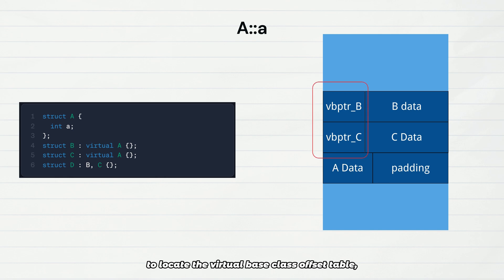Accessing A::a requires two levels of indirect addressing: use the virtual base class pointer to locate the virtual base class offset table, calculate the actual address of the A sub-object using the offset table, and only then can the value of a be read.